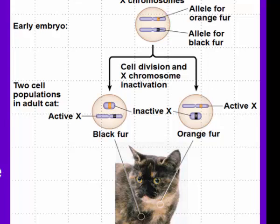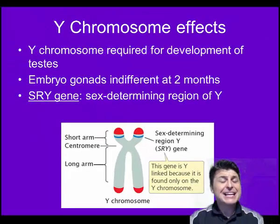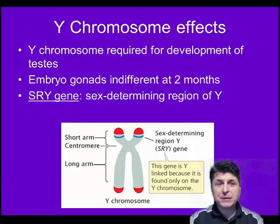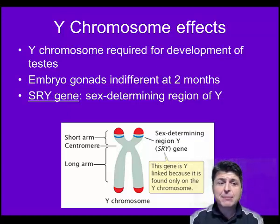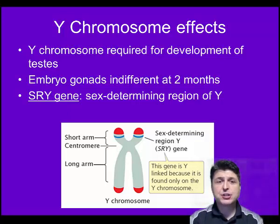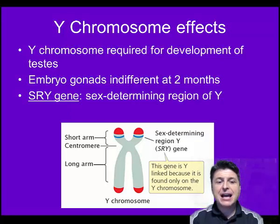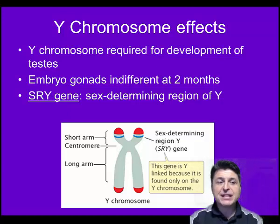And so in the adult organism, we're going to see some hair that's black and some hair that's orange — a mosaic of that characteristic. Interestingly, gene expression can actually be influenced by other genes. A great example of this is the effects of a gene called the SRY gene, which is located on the Y chromosome. This SRY gene is the male-determining gene, required for the development of testes.